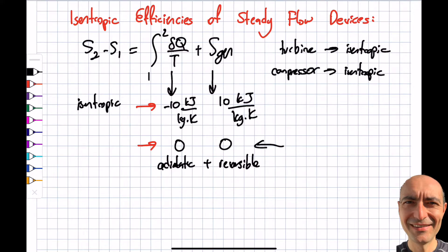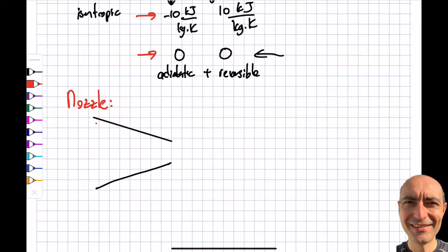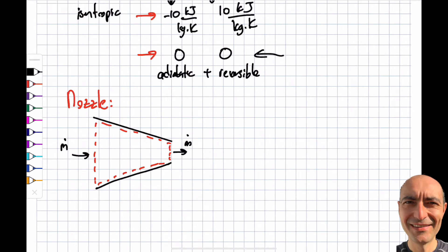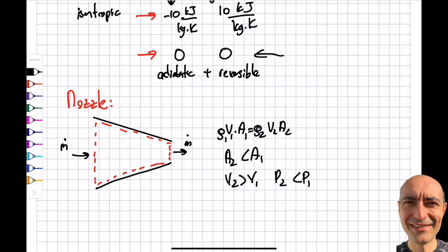I'll follow the order from module 5 and talk about the nozzle first. For a subsonic flow, the nozzle has no work input — think of the end of a garden hose, though in thermodynamics we deal with jet engines and energy extraction. There's one inlet and one outlet. Using continuity, rho_2 * v_2 * A_2 = rho_1 * v_1 * A_1. Since A_2 is much smaller than A_1, v_2 becomes much larger than v_1, and p_2 is less than p_1.